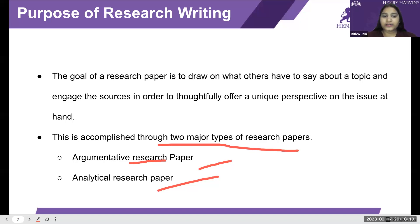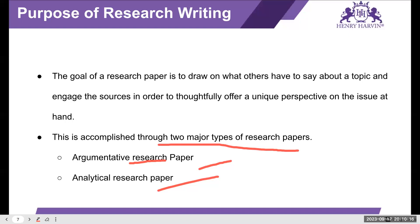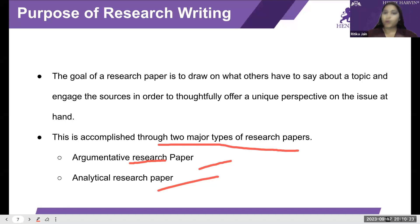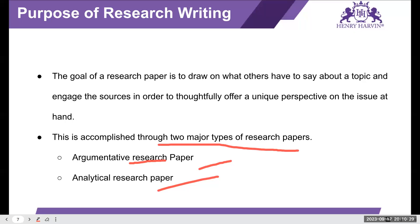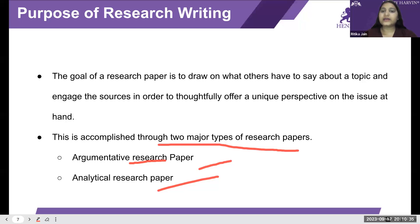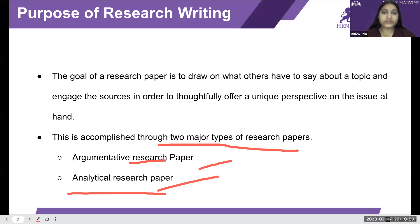Let me clarify with an example. Let's suppose there is poverty in India. You are just sharing how poverty happens, why it takes place, and what the current rate of it is — just talking about it, analyzing things and giving a report. That is called an analytical research paper. There is no opinion, just information. You can also call it an informative research paper.